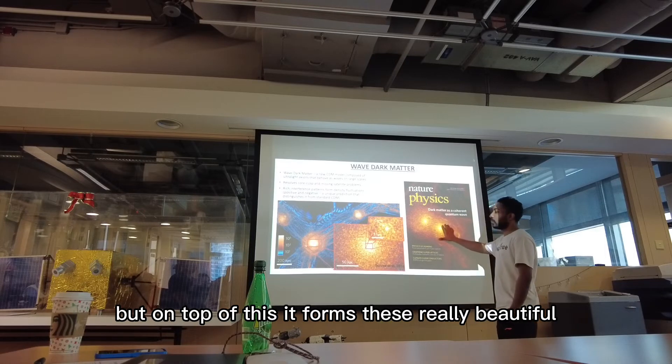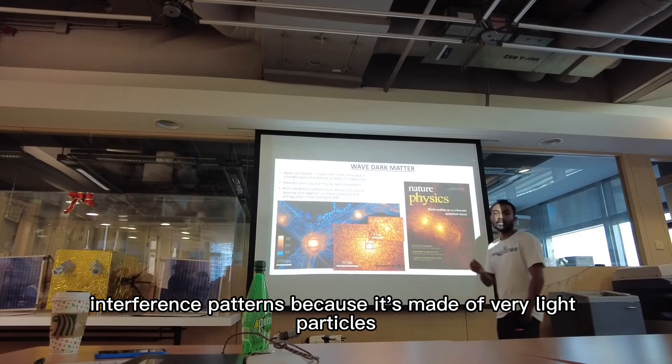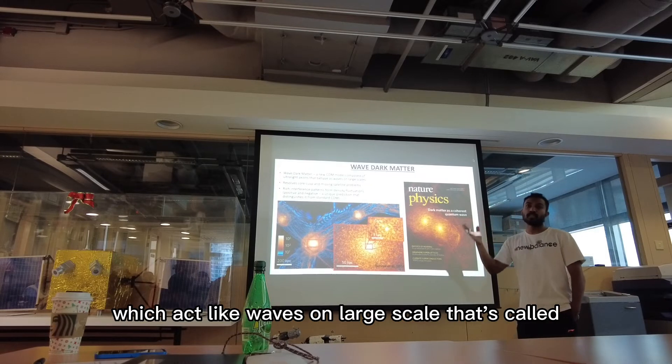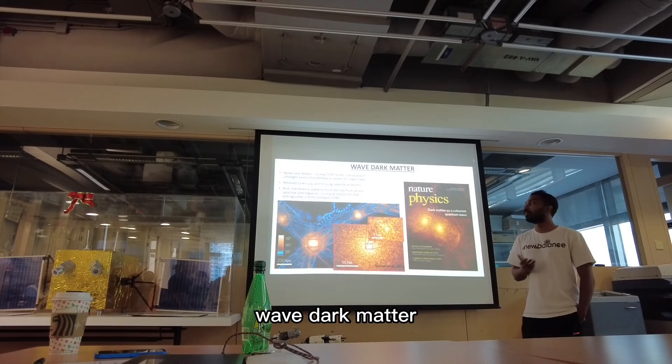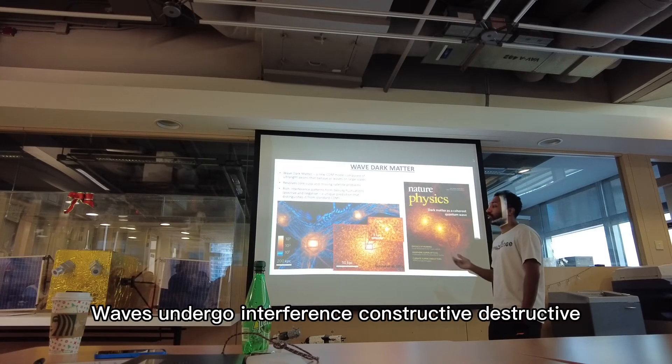But on top of this, it forms these really beautiful interference patterns because it's made of very light particles which act like waves on large scales. That's why it's called wave dark matter. So waves, as you learned in high school, waves undergo interference, constructive, destructive.